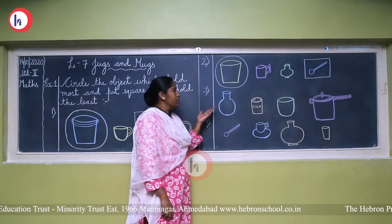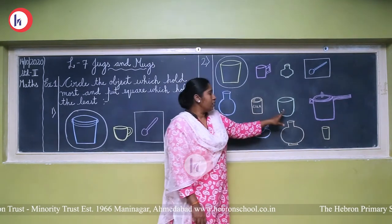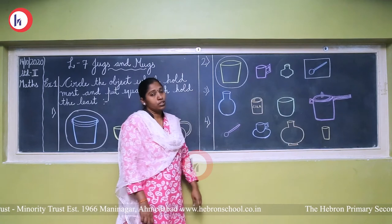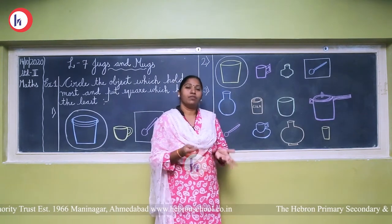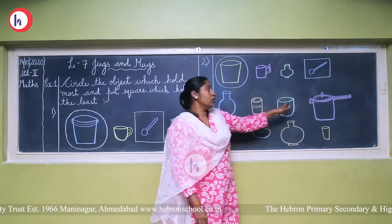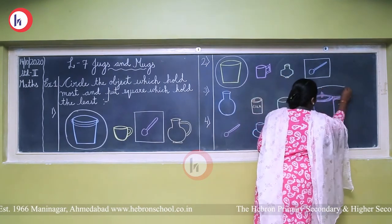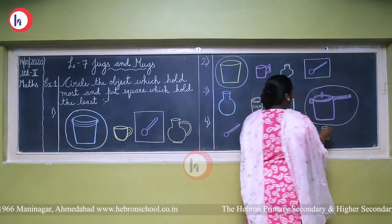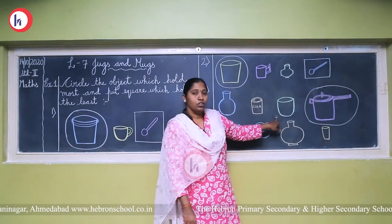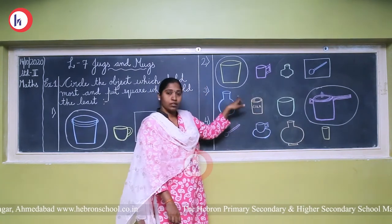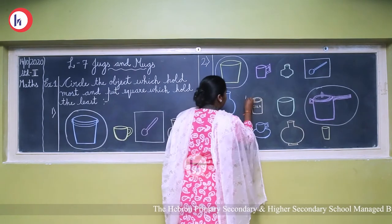In the third set we have another four objects — a pot, a cola juice can, a vessel, and a cooker. The cooker, the pressure cooker in which mama cooks rice, dal, and sometimes boils potatoes — it is very large in size so it contains more. We circle the cooker. For the least, we put a square on the small juice can, as it holds very less quantity.